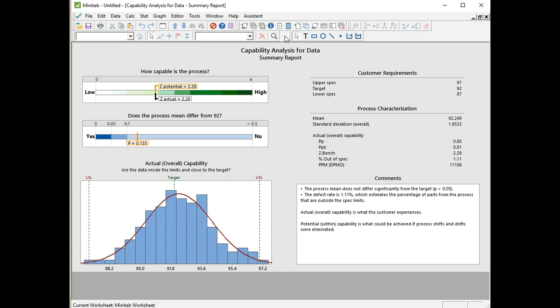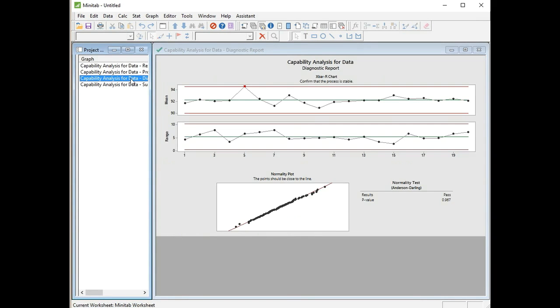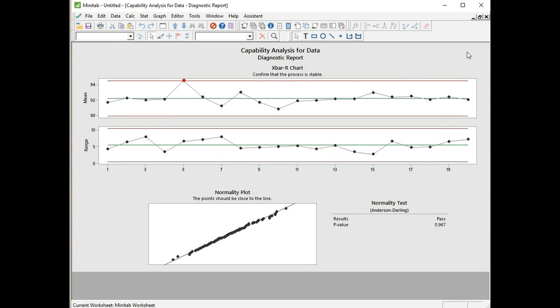Let's have a look at the next page in the report, which will be the diagnostics. So we get 1 point which is out of control, so we know we've got a bit of special cause variation. And we see that our data can be said to come from a normally distributed population with a p-value of 0.96. So we know we're using the right kind of analysis, capability analysis, for normal data.